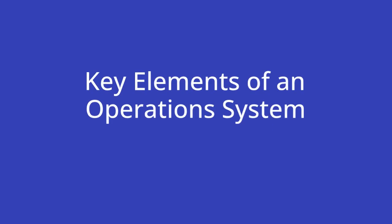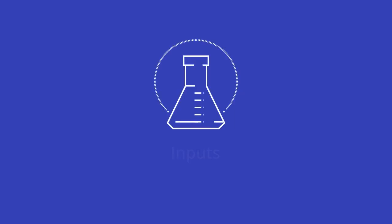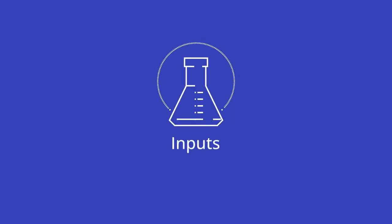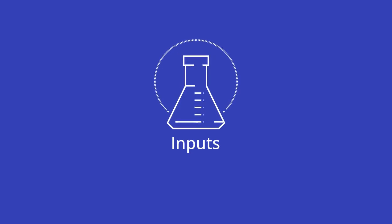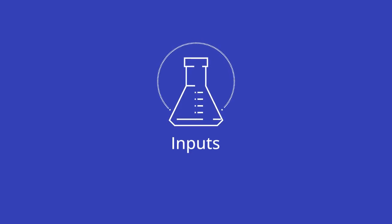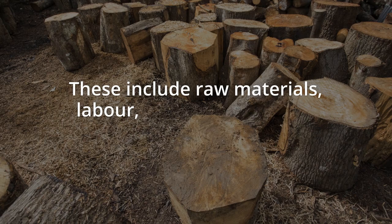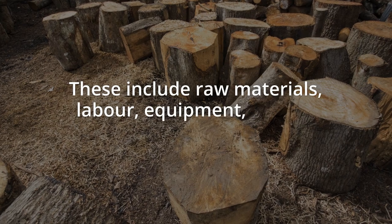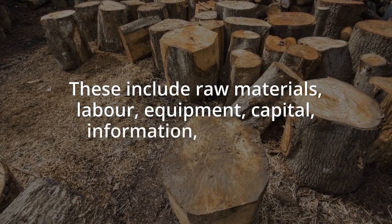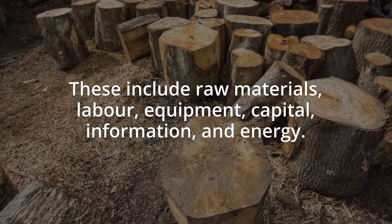Let's explore the key elements of an operations system with real-world examples. Step 1: Inputs. This refers to the resources used in the production process. These include raw materials, labor, equipment, capital, information, and energy.